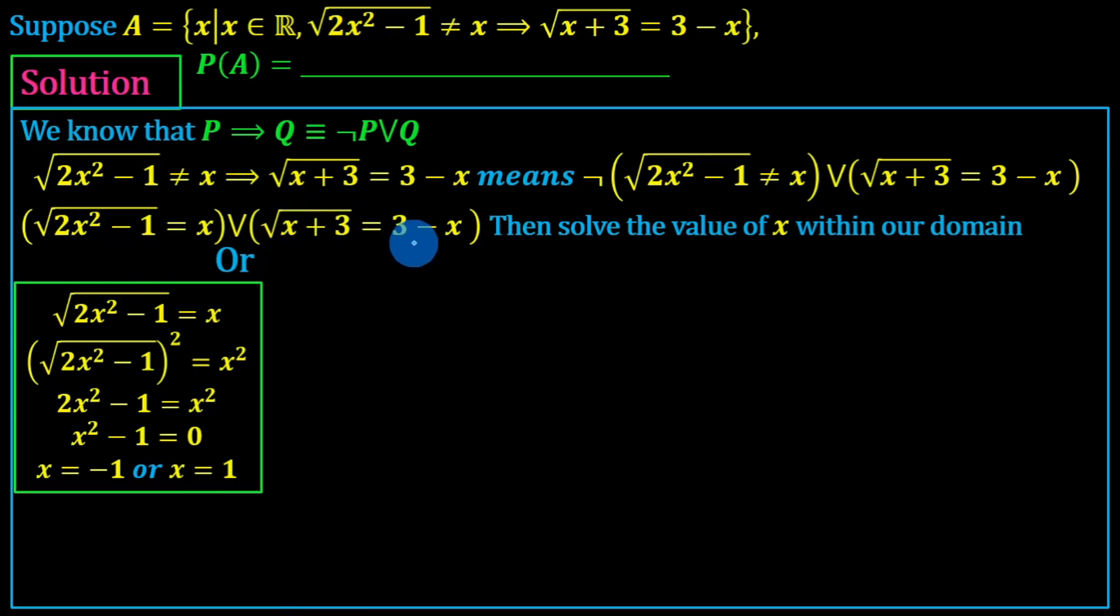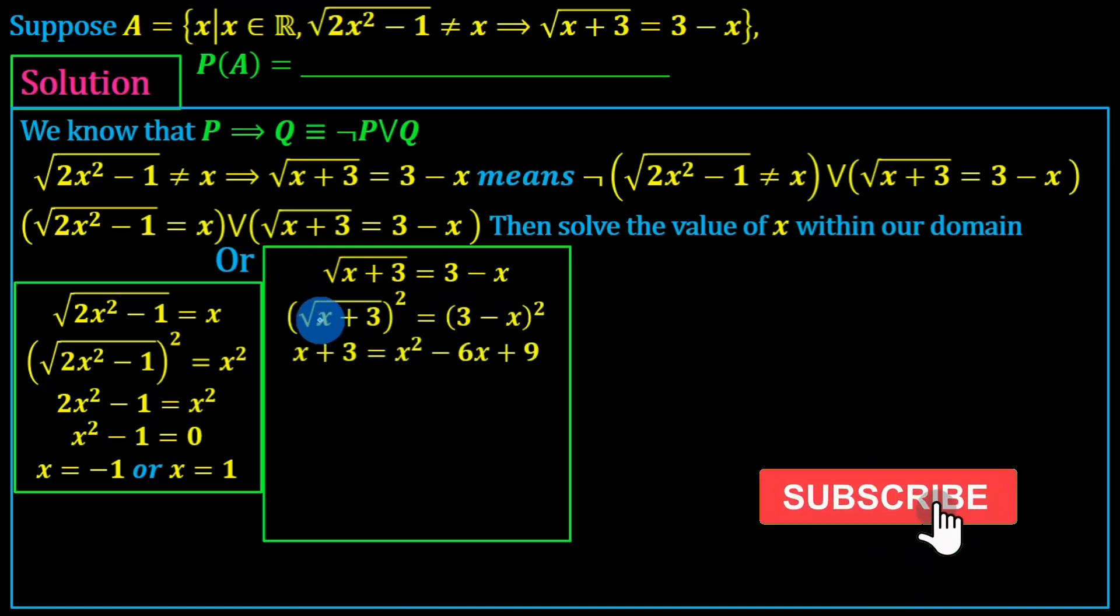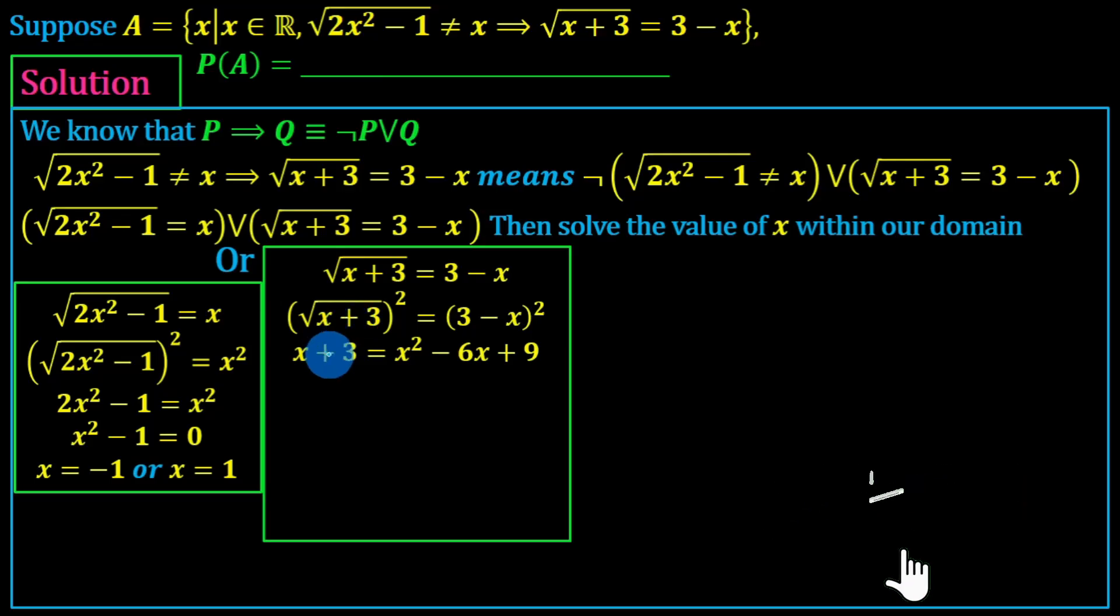Now for the square root of x plus 3 is equal to 3 minus x. Both sides squared: square root of x plus 3, the whole squared, is equal to 3 minus x, the whole squared.